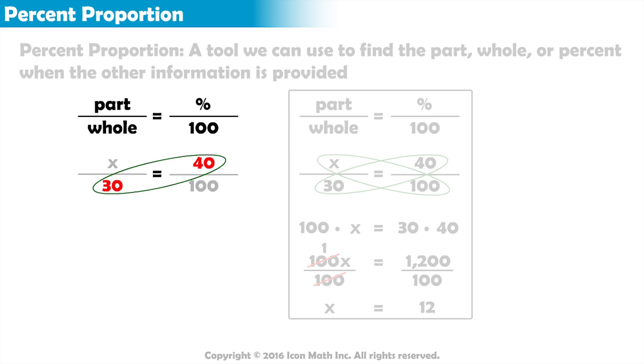Notice this diagonal doesn't contain a variable. If you multiply the numbers in the diagonal that doesn't contain a variable, then you divide by the leftover number, you will solve the proportion.